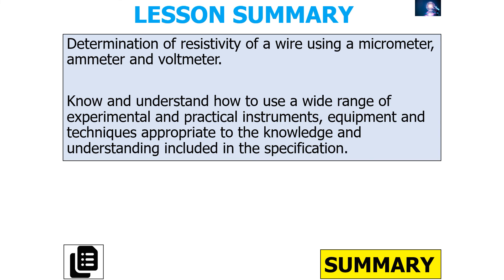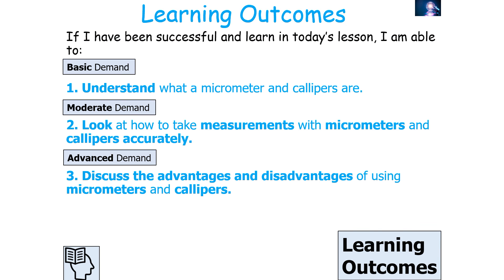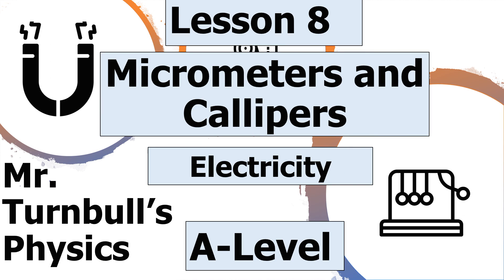In today's lesson we looked at how to use a micrometer to determine the diameter or thickness of a wire, which can then be used to determine the resistivity of a wire. We've understood how to use a wide range of experimental instruments appropriate to calculating resistivity. We should now be able to understand what a micrometer and calliper are, take accurate measurements with them, and discuss their advantages and disadvantages. Thank you for watching and have a lovely day.